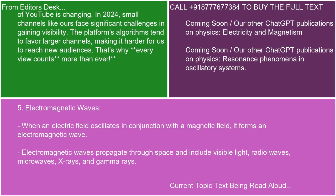5. Electromagnetic Waves. When an electric field oscillates in conjunction with a magnetic field, it forms an electromagnetic wave. Electromagnetic waves propagate through space and include visible light, radio waves, microwaves, x-rays, and gamma rays.